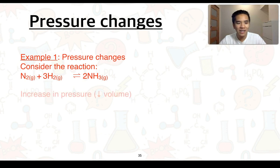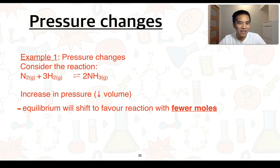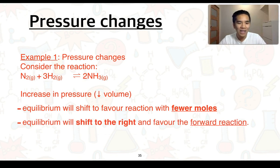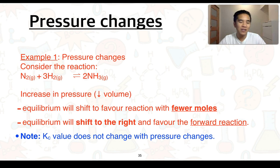For example 1, if we were to increase the pressure — and we could do that by reducing the volume of the container of this gaseous system — this will result in more collisions of the gas particles with the container, and that's what results in the increase in pressure. We know that the equilibrium will want to shift to try and decrease this pressure, and to do so it's going to favour the reaction which has fewer moles or fewer molecules. This will ensure fewer collisions take place with the container, which will decrease the pressure. Looking at this equation, we can see it's the right-hand side that has fewer moles, so equilibrium will shift to the right and favour the forward reaction. Like with concentration changes, the Kc value does not change with pressure changes.